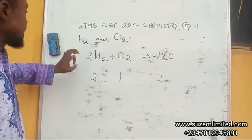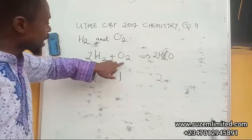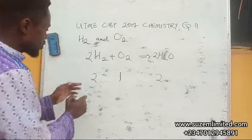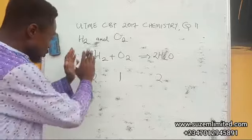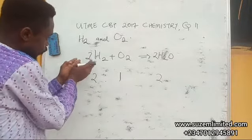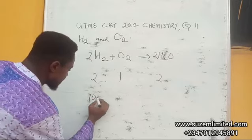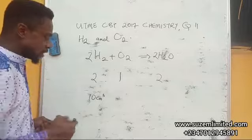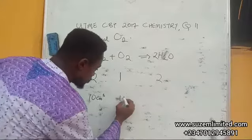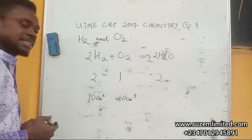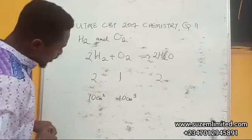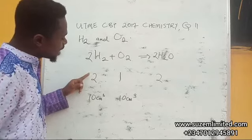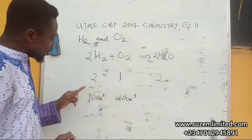But the question says that 10 cm³ of hydrogen was sparked with 10 cm³ of oxygen. The volume of oxygen that was used was 10 cm³, volume of hydrogen was 10 cm³. Using Gay-Lussac's law, it's trying to let us know that this hydrogen can only combine in ratio of two is to one with oxygen.